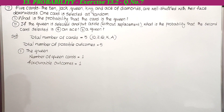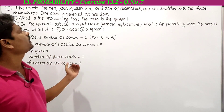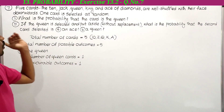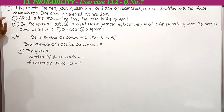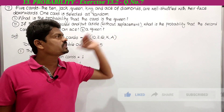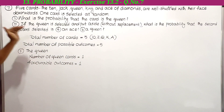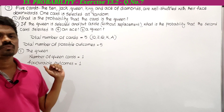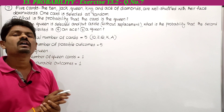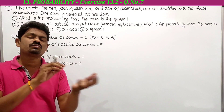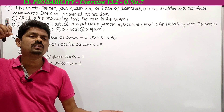The problem asks: five cards — the ten, jack, queen, king, and ace of diamonds — are well shuffled with their face downwards. One card is selected at random. Number one: what is the probability that the card is the queen? Number two: if the queen is selected and put aside without replacement, what is the probability that the second card selected is (a) an ace, or (b) a queen?